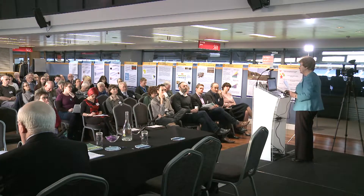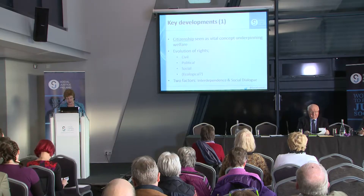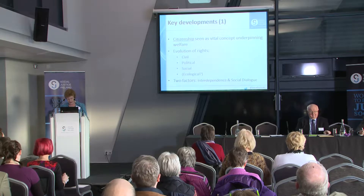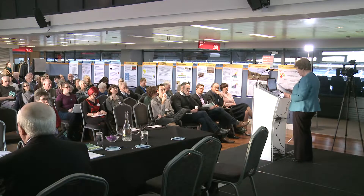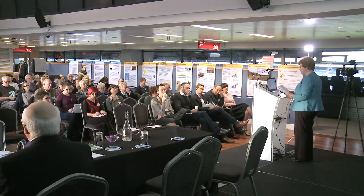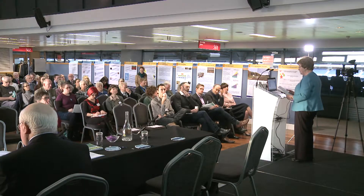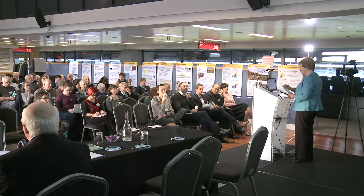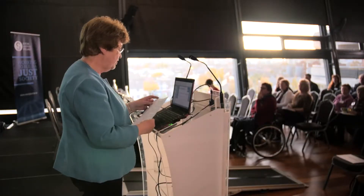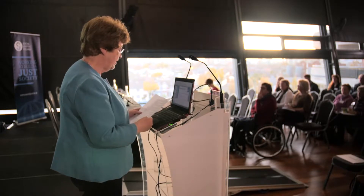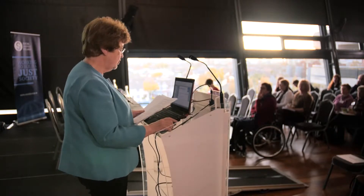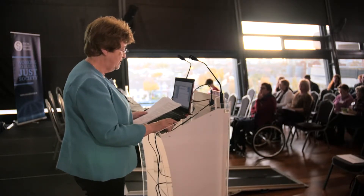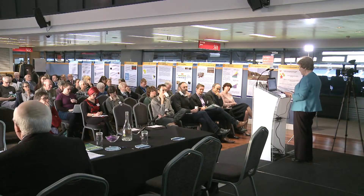We go on then to look at three key developments. The first concerns citizenship. Marshall understood the welfare state to have emerged from a broadening understanding of citizenship and the rights that went with being a citizen. He noted the evolution of rights: in the 18th century civil rights emerged, including freedom of speech, freedom of religion and the right to own property. These were followed in the 19th century by political rights, including the right to vote and to hold public office. Marshall saw the 20th century as having produced social rights, including the right to economic and social security through education, housing, health care, pensions and other services.